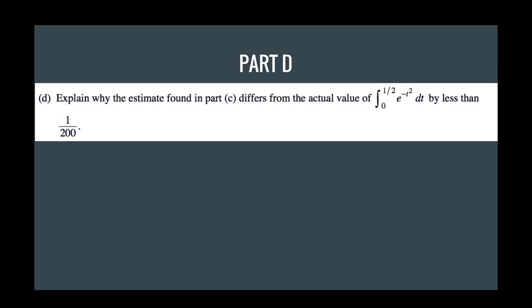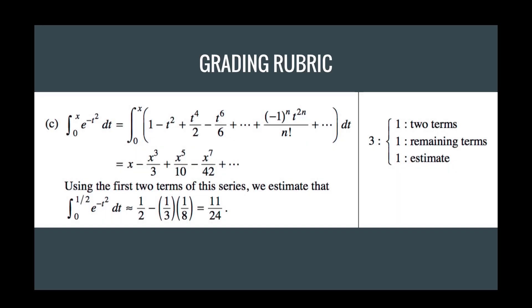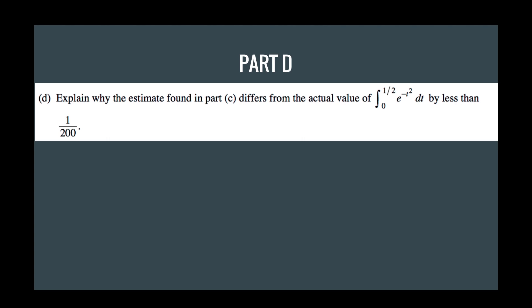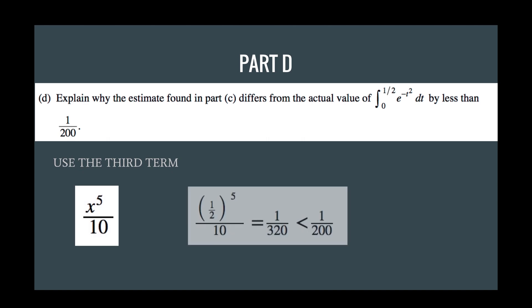Part D is using error, whether it be alternating series error or integral error or even Lagrange error. So basically, we just want to prove that the value from zero to one half differs by less than 1 over 200. So the way we approach this is that we know it's an alternating series error. If you go back here, you'll see that we have, in general, x minus x cubed plus and then minus, so the value changes. So what we want to do is use the third term. So we use the third term, and we plug in one half into the third term. So the third term is x to the fifth over 10, and you just plug in one half into the x value, and that's equal to 1 over 320, which is obviously less than 1 over 200.